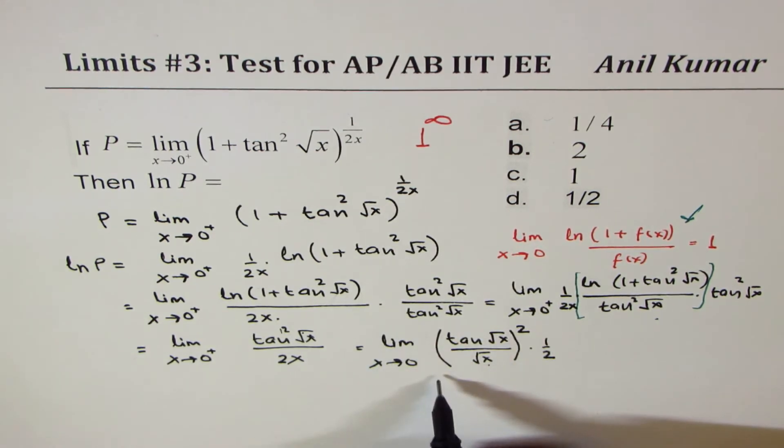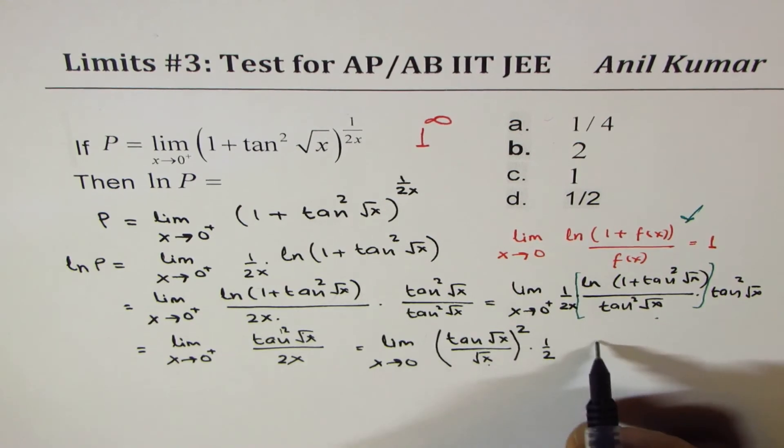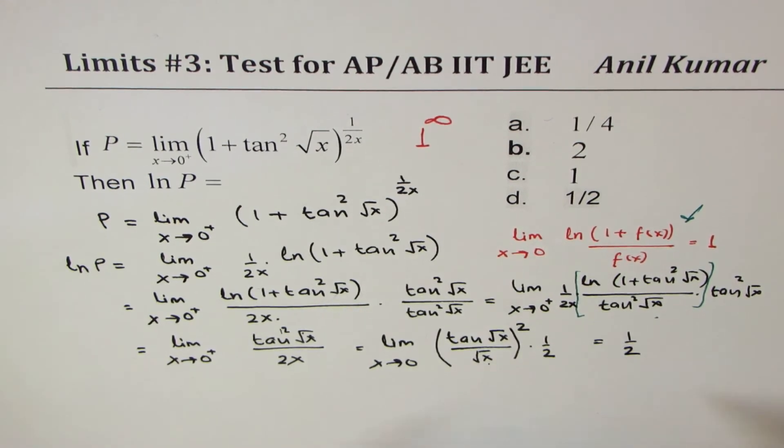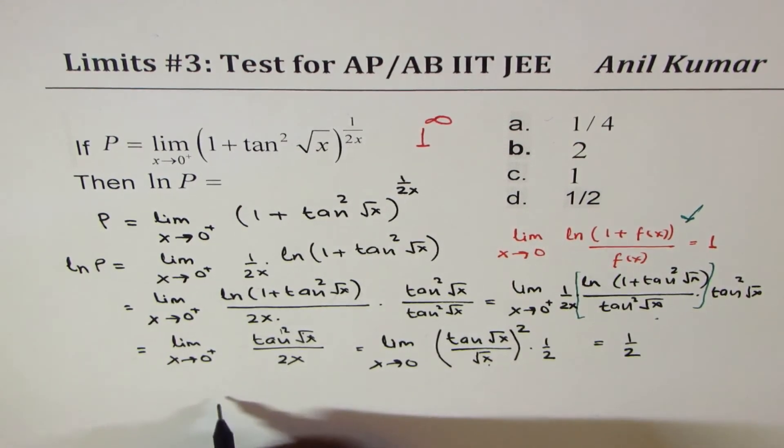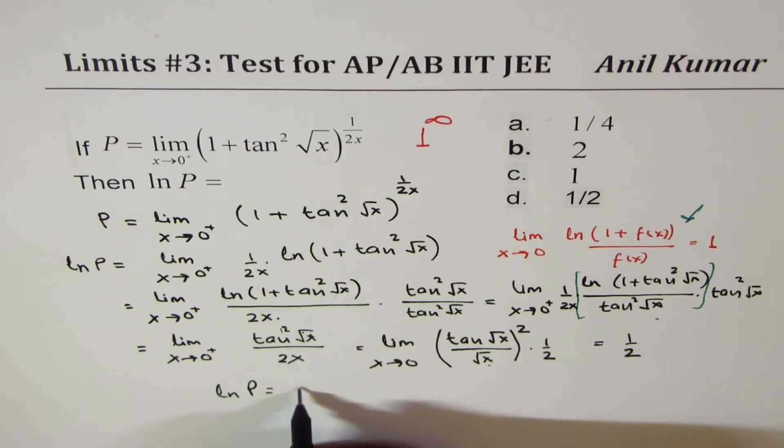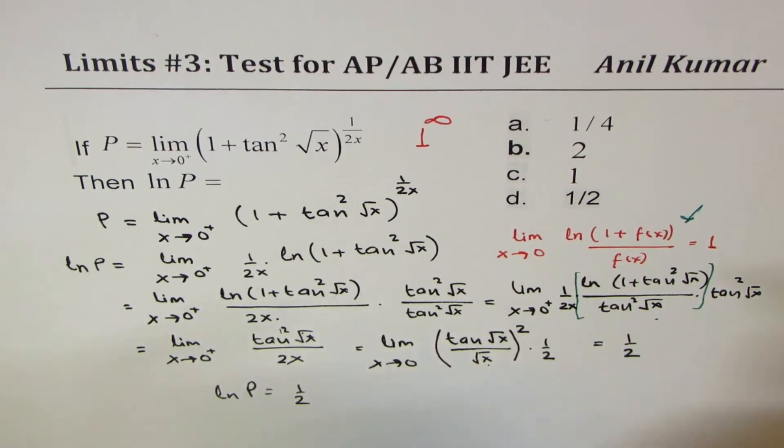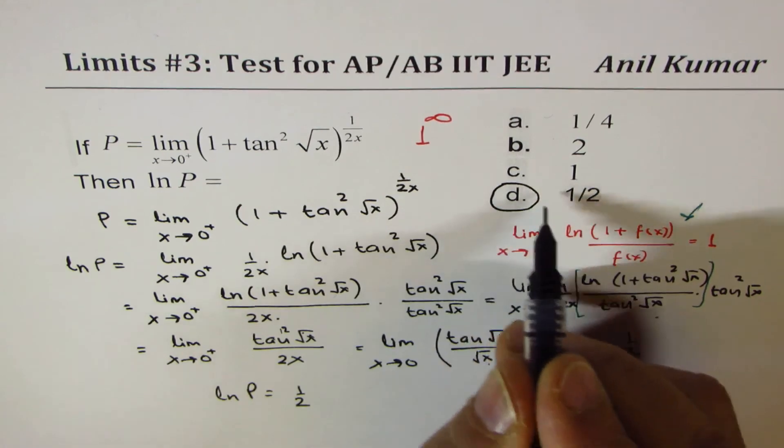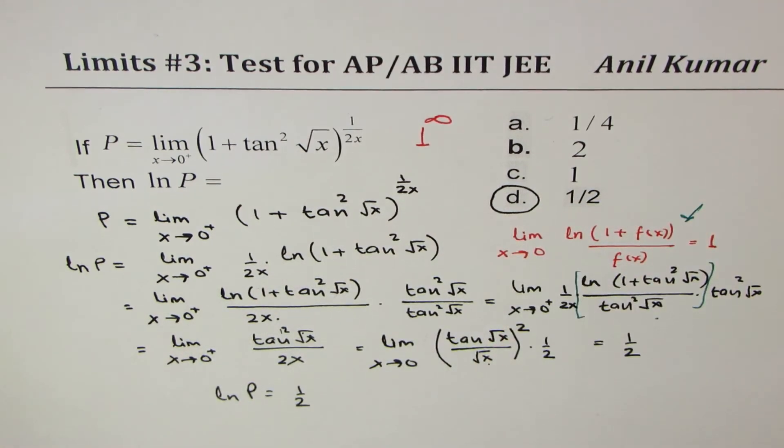Now limit of this term is 1, and therefore what we get here is half as our answer. So we have ln P equals to half. So option D, which is equal to 1/2, is the right answer for the given question.